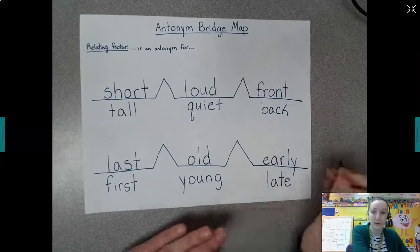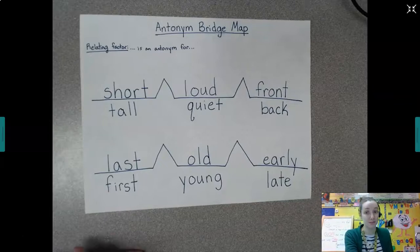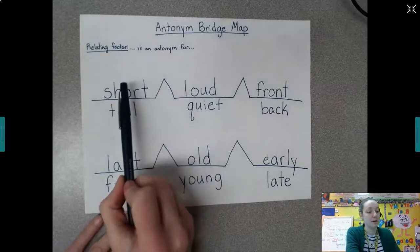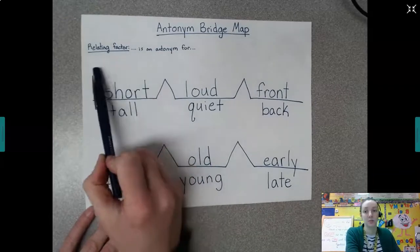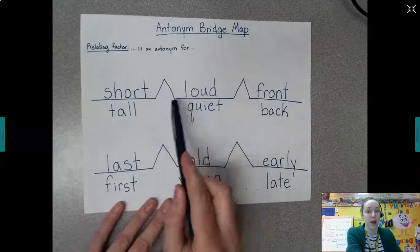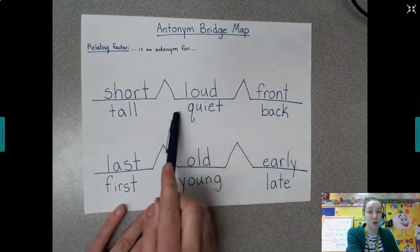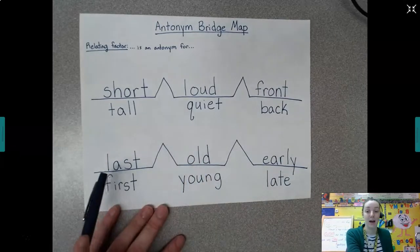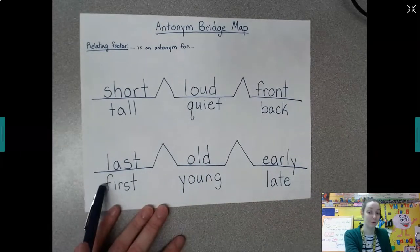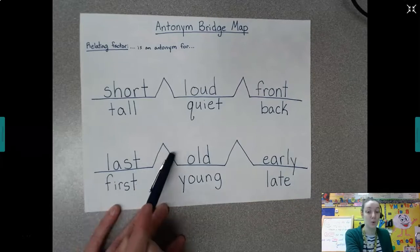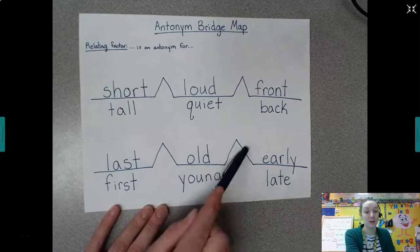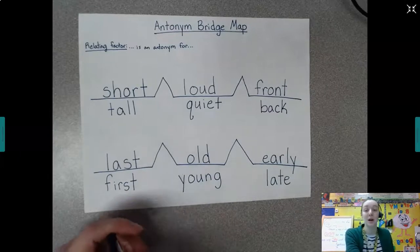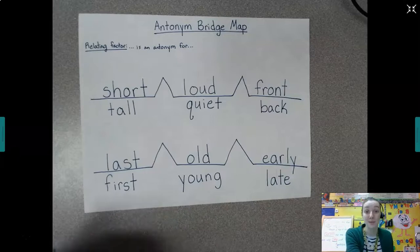Antonyms are pretty simple once you remember what it means, because they're words that mean the opposite. In our bridge map we have: short is an antonym for tall, loud is an antonym for quiet, front is an antonym for back, last is an antonym for first, old is an antonym for young, and early is an antonym for late. Remember — antonyms are opposite.